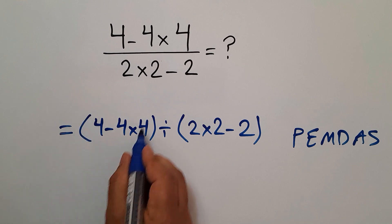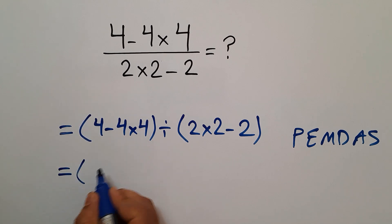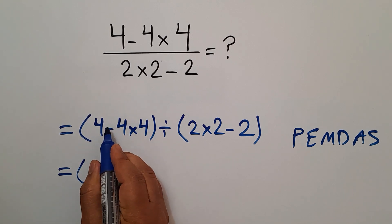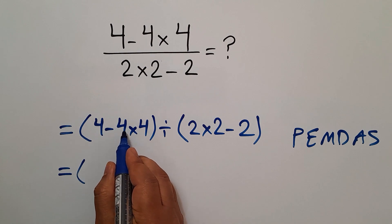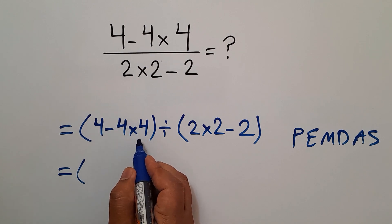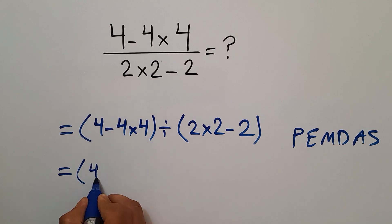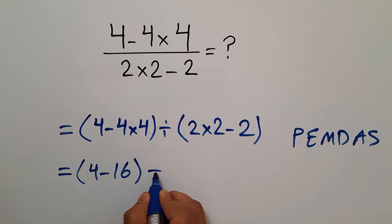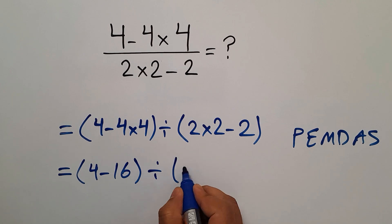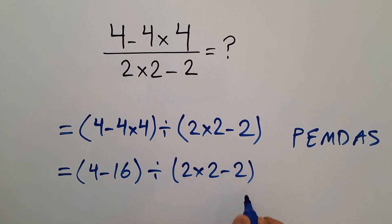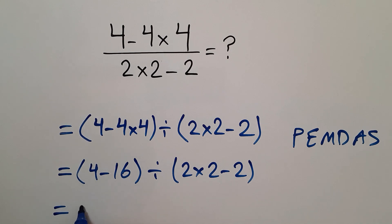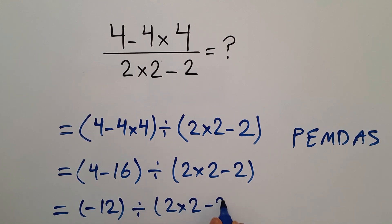So here, first we do these parentheses. Inside the first parentheses, we first do this multiplication: 4 times 4 gives us 16. So we have 4 minus 16, divided by 2 times 2 minus 2. Now, 4 minus 16 gives us negative 12. And we have negative 12 divided by 2 times 2 minus 2.